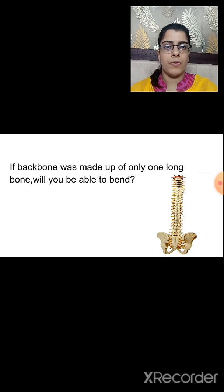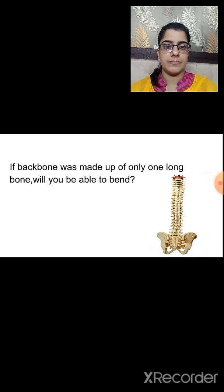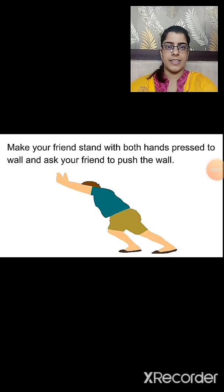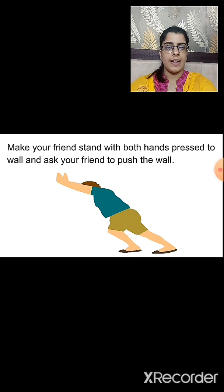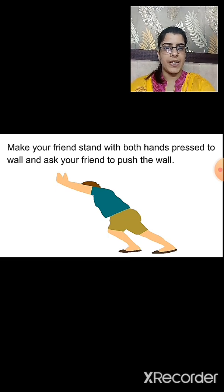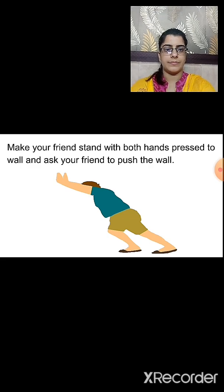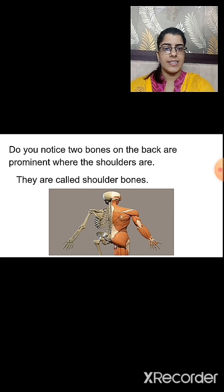If the backbone was made up of only one long bone, we would not be able to bend it. Now let us see another activity: make your friend stand with both hands pressed to the wall and ask your friend to push the wall. You will notice that the two bones on the back are prominent where the shoulders are — these bones are known as shoulder bones. You can see in the image where the shoulder bones are located and how they look.